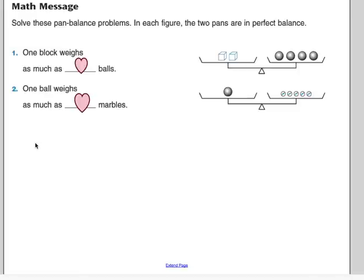One block weighs as much as how many balls? Well, if you look over here, we've got only blocks on one side, only balls on the other. So this is pretty simple, just figuring out how many balls to each block. I've got two blocks, so if I divide by two, that would be one block here. And if I divide by two, that would be two balls here. So the answer is two balls.